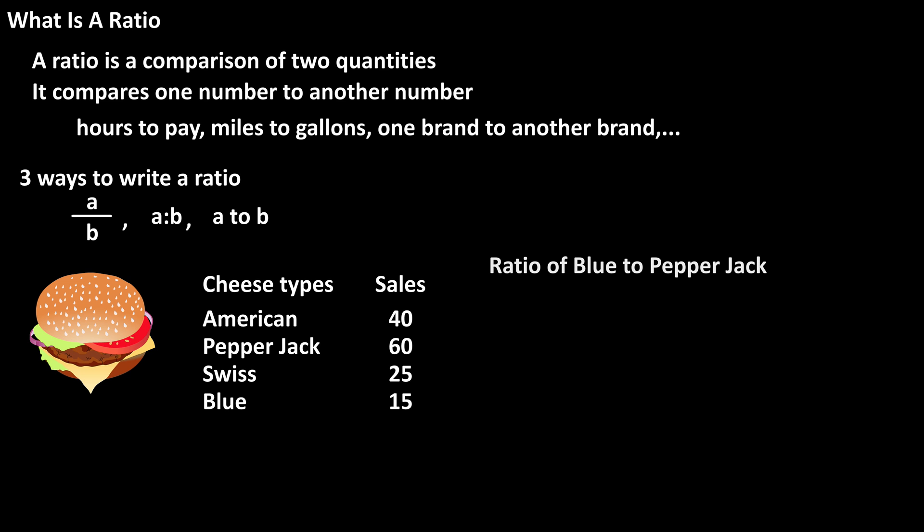If we want to find the ratio of blue cheese to pepper jack cheese, we take the first number mentioned, in this case blue cheese, and put that on top, so 15 on top in the numerator, and the second number, pepper jack, which is 60, on the bottom in the denominator. And this fraction can be reduced to 1 over 4.